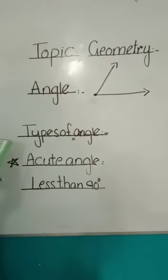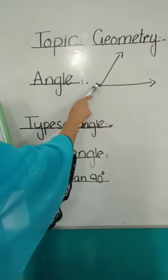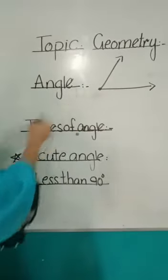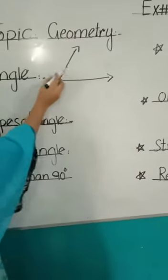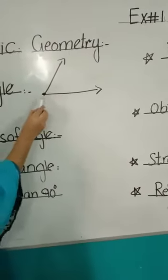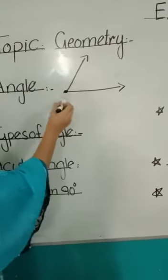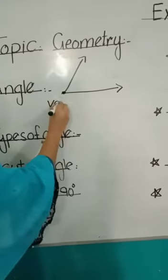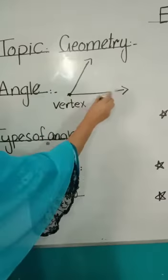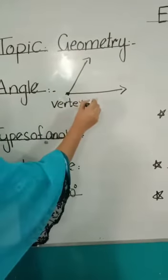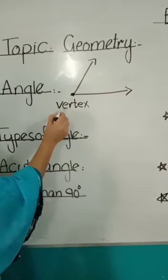What is angle? An angle is a figure formed by two rays. A common end point is called vertex. Where two rays are joined, it's called the end point and it's also called its vertex. Angle has two rays — two rays and one end point — and that end point is called vertex.